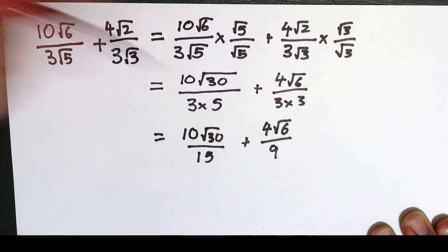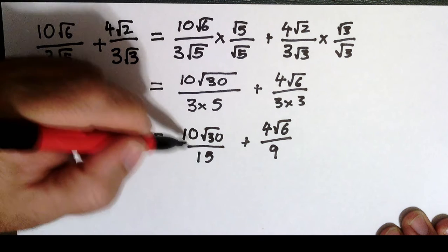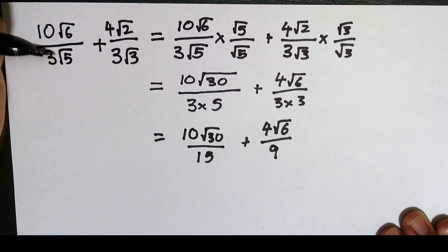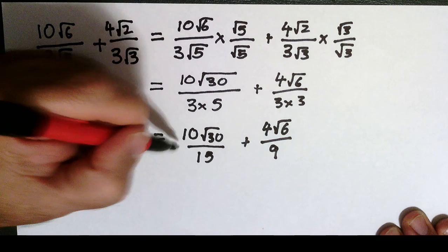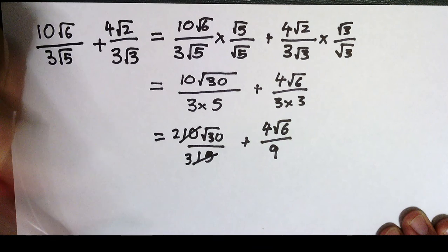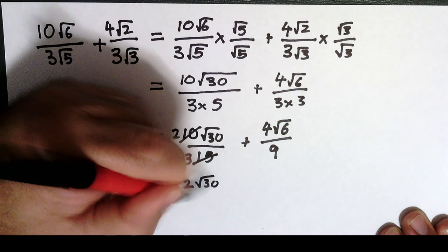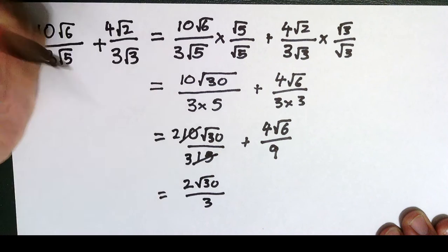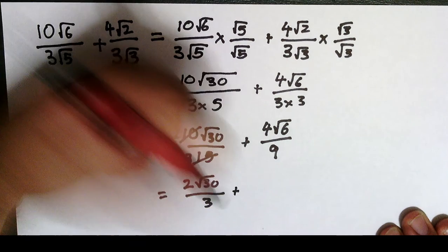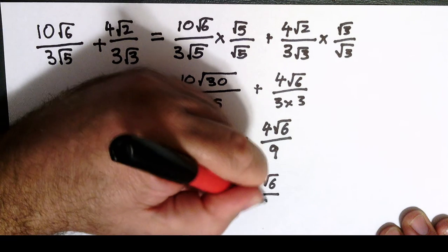Let's keep going and simplify a bit more. I've got 3 times 5 is 15, so I've got 10 root 30 over 15 plus 3 times 3 is 9, so 4 root 6 over 9. Now look at this, I've got 10 over 15, I can simplify. 10 over 15 is 2 over 3. So here I've got 2 root 30 over 3 plus 4 root 6 over 9.